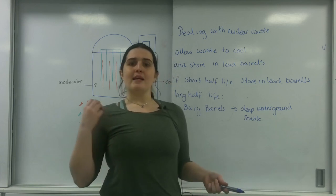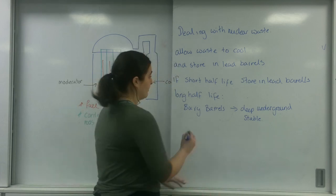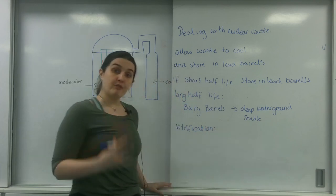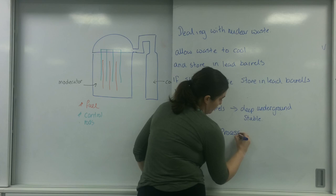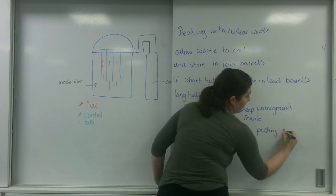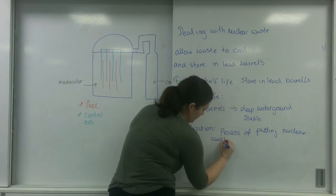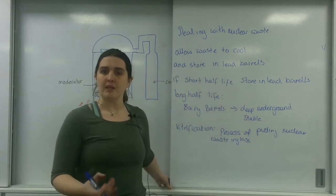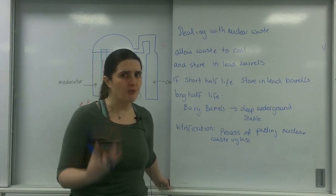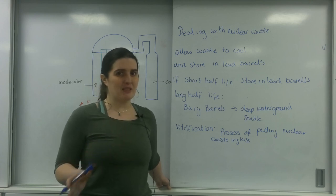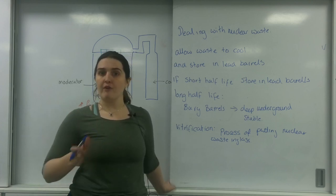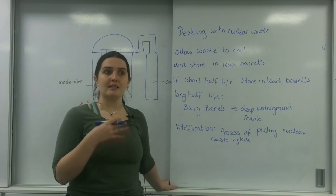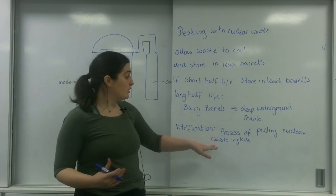So another method that we can actually store nuclear waste is for a process called vitrification. Vitrification is the process of putting the nuclear waste in glass. Now silica is a very stable atom, so it won't react with any chemicals, it doesn't corrode, it's not like iron or steel. But it is a very expensive process. For this nuclear waste that's going to be lasting a very long time, and you do not want it to affect the local environment, vitrifying is a very good way of making sure that it doesn't corrode and it's stable. This idea of putting nuclear waste in glass.